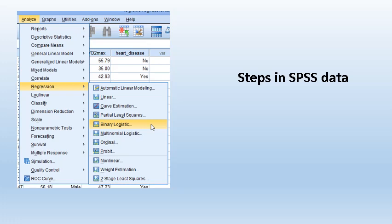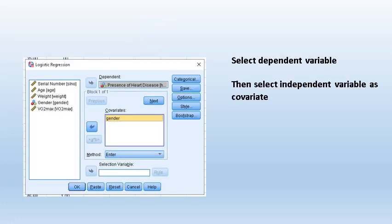Now we can go through the steps in SPSS. First, click on the Analyze button, then click on Regression. There are many regression options, so please select Binary Logistic, because the outcome variable is binary or binomial.